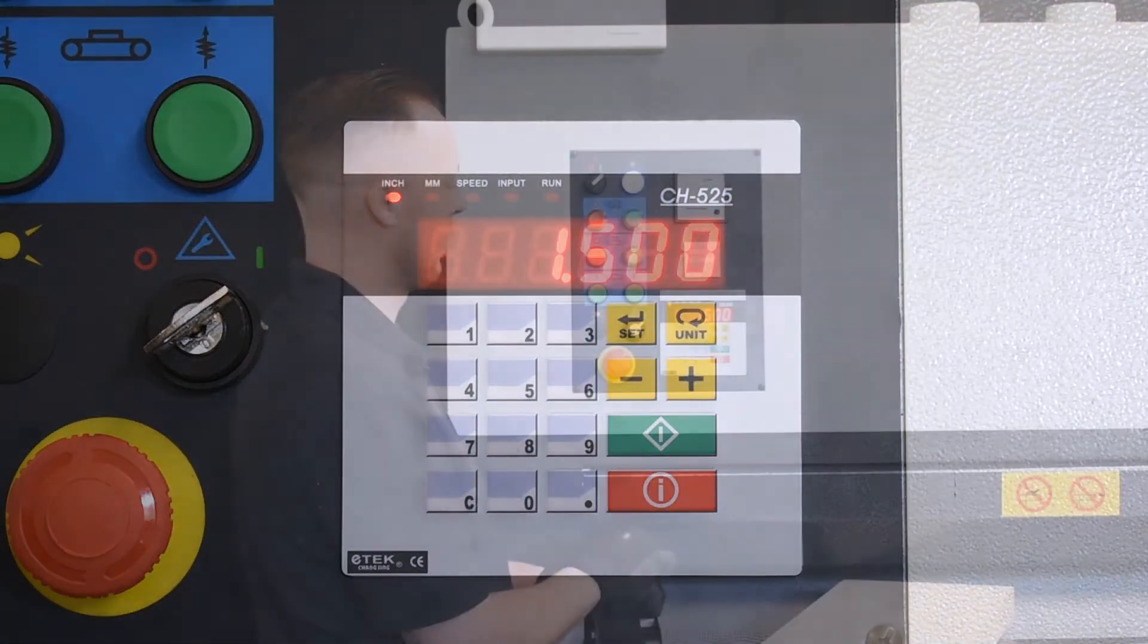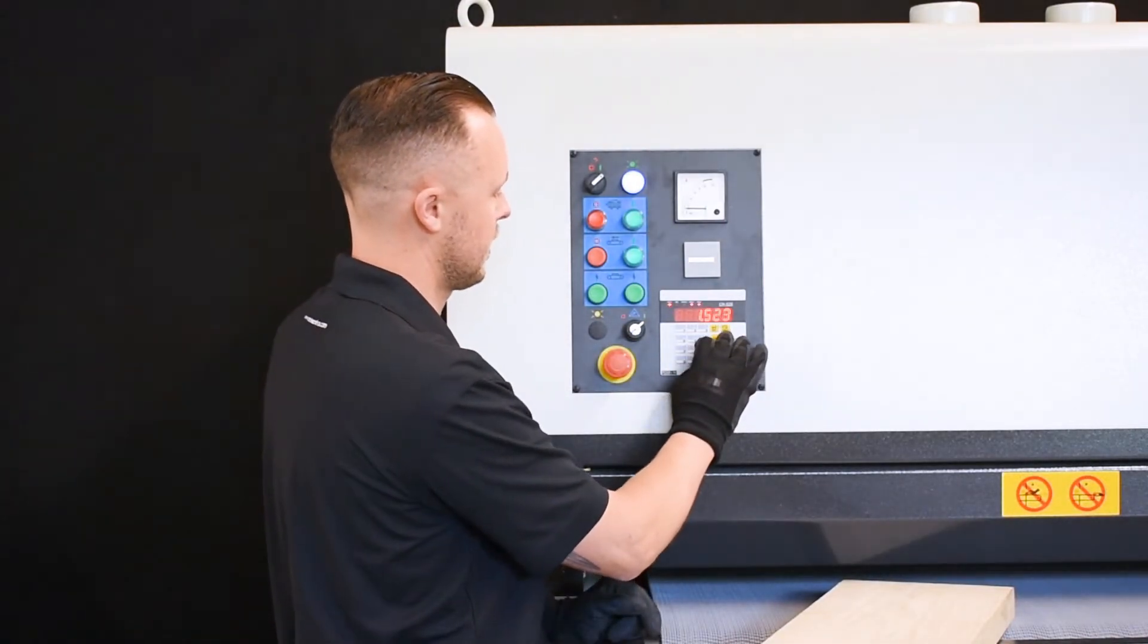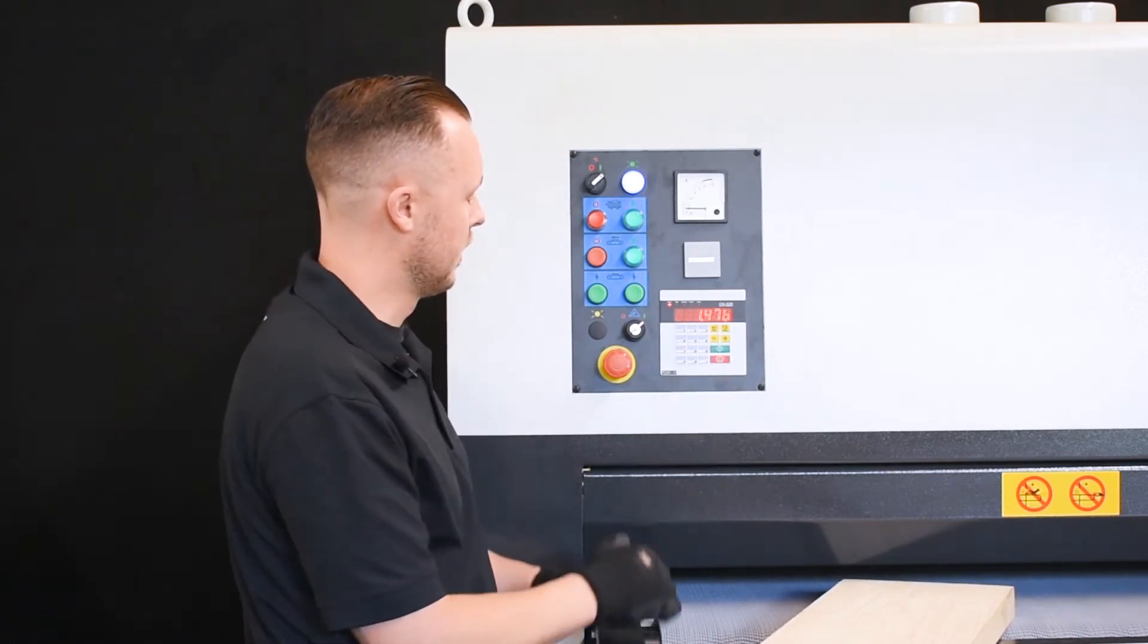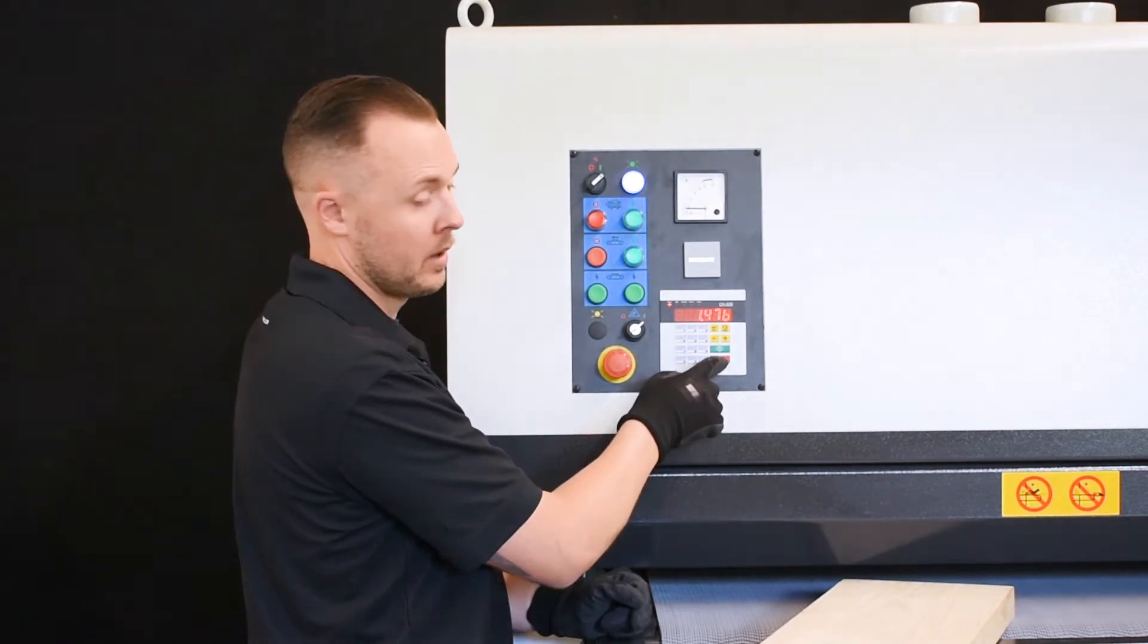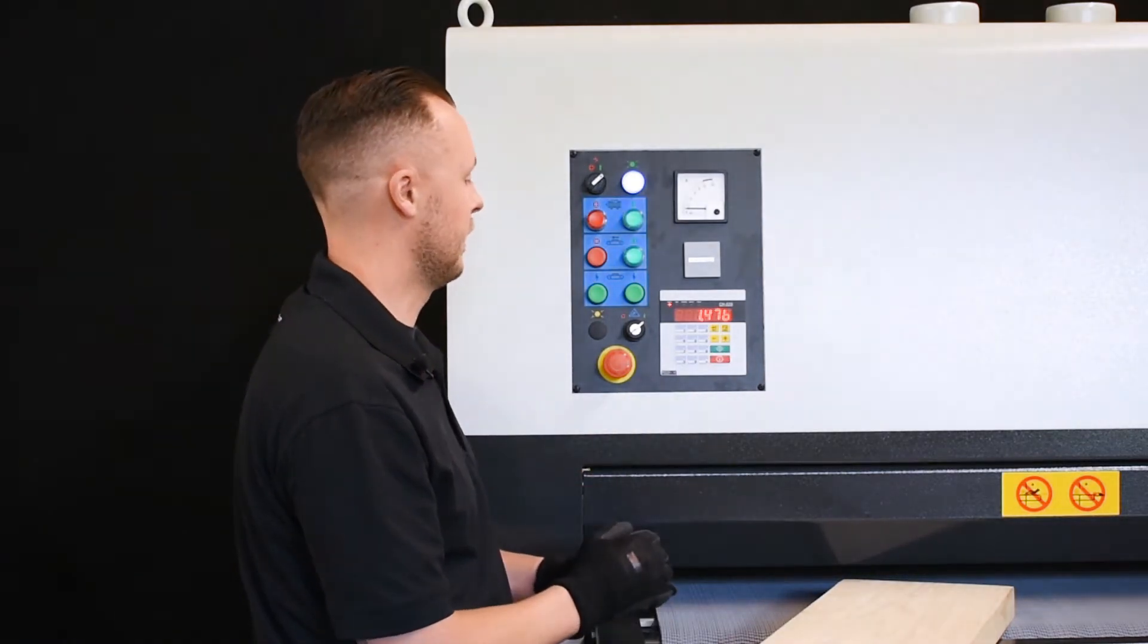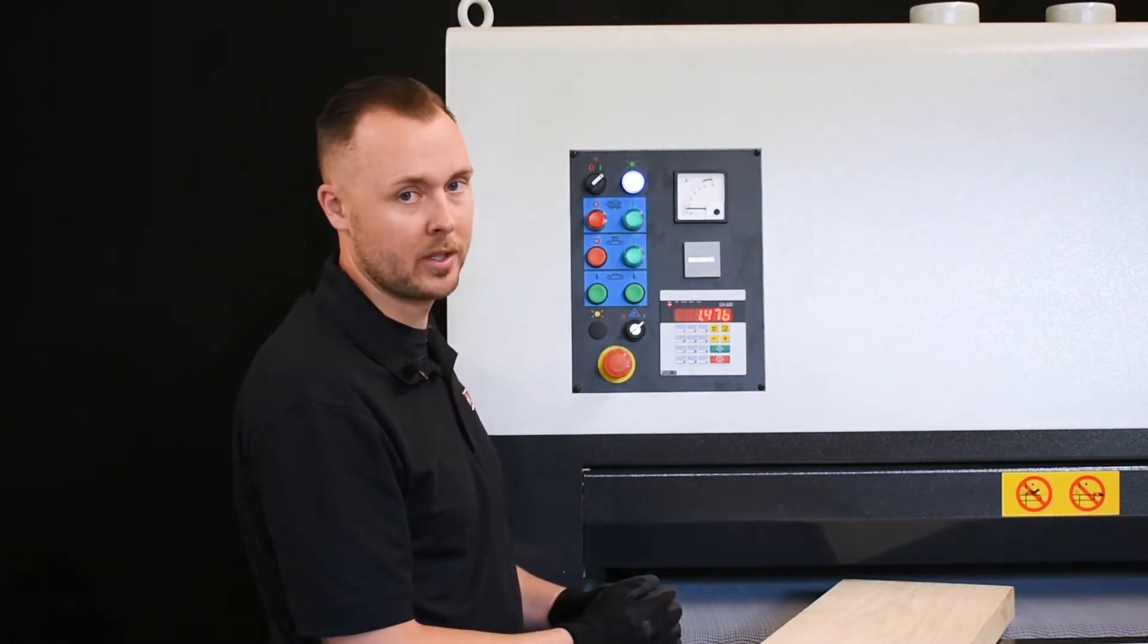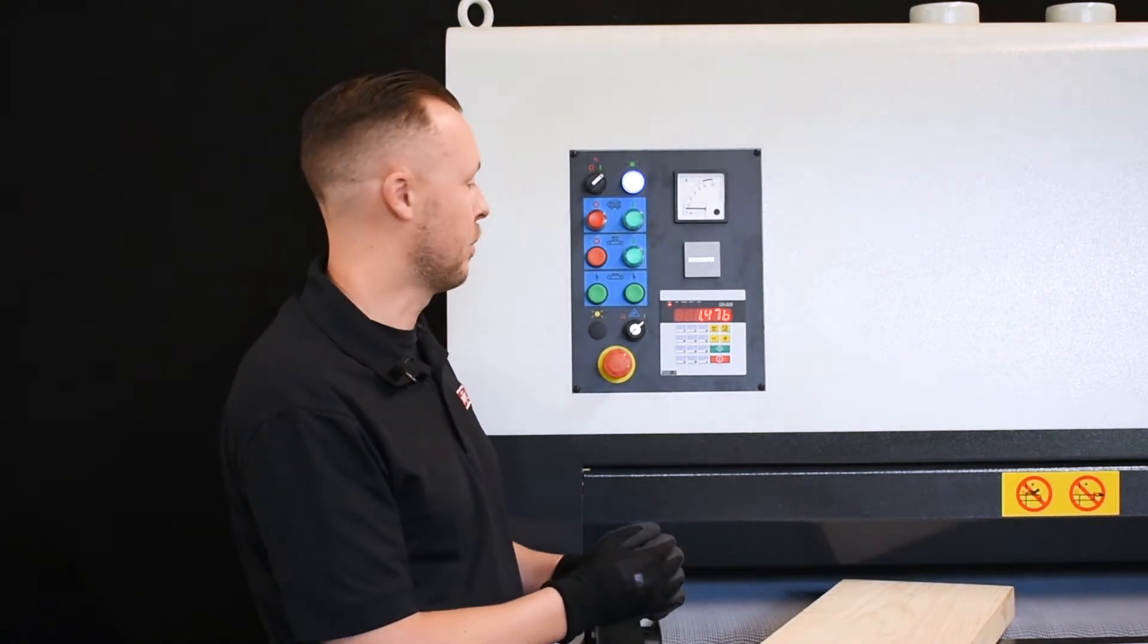We can also manually move the axes in the plus and minus direction. Also there's a green start button and a red stop button. The green start button will trigger the dimension that you're trying to reach and the stop button will just stop the axes at any point.